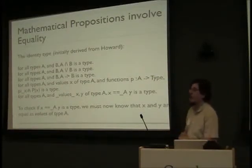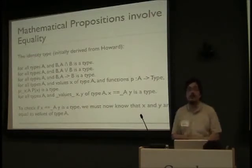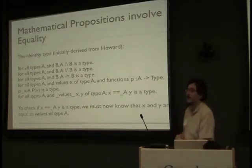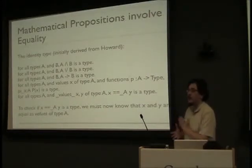Now we want to introduce a new type: the equality type. For all types A and values x, y of type A, x equals y is a type. We're going to have a type of equalities between values as a proposition that you'd like to prove. Because if you can't say 2 plus 2 equals 4 in your system, there's probably other portions of mathematics that might not be so good at formalizing.